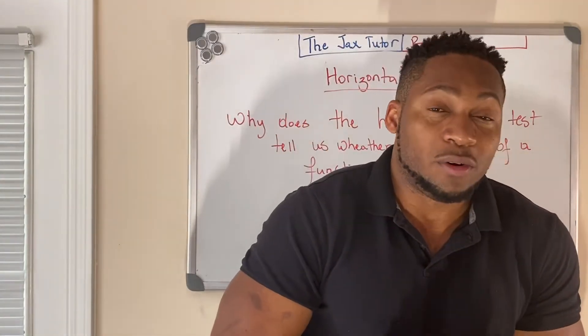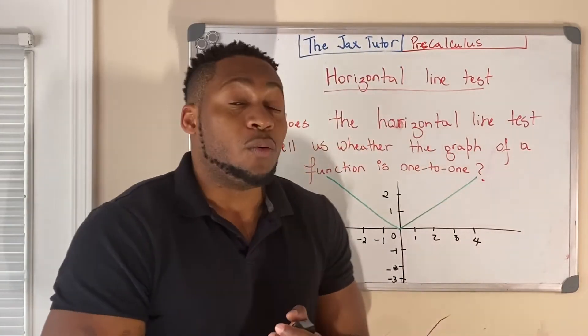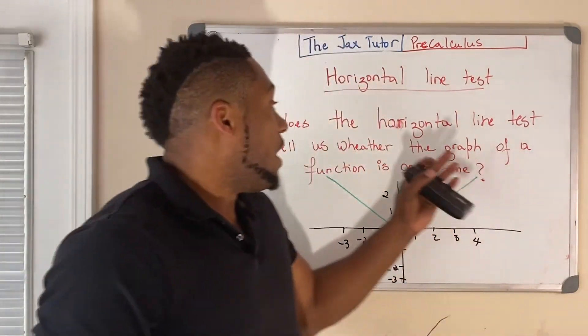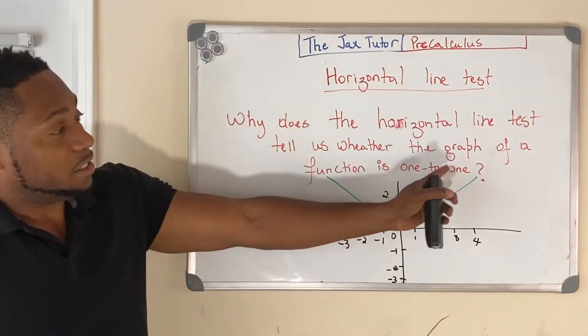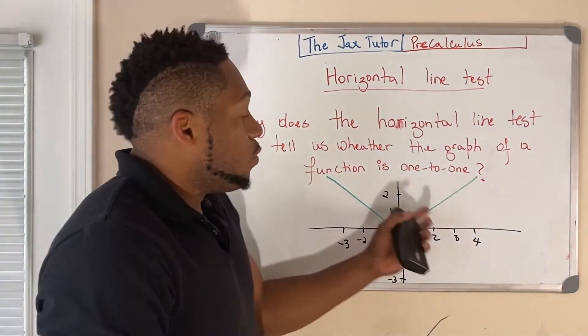So, in this question, what we're interested in is: why does the horizontal line test tell us whether a graphical function is one-to-one?